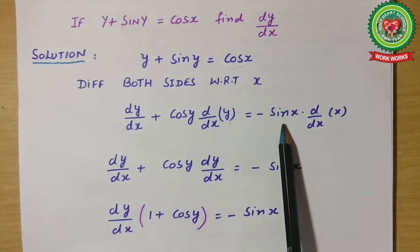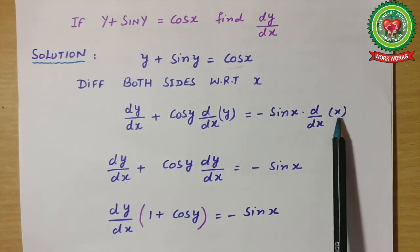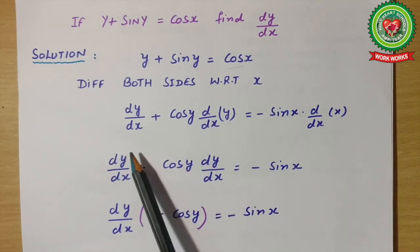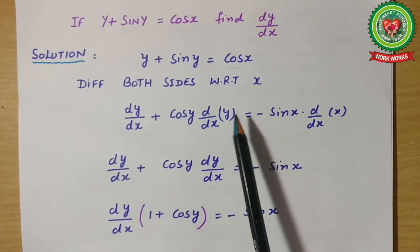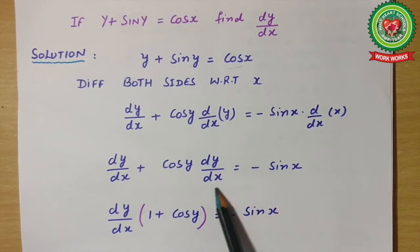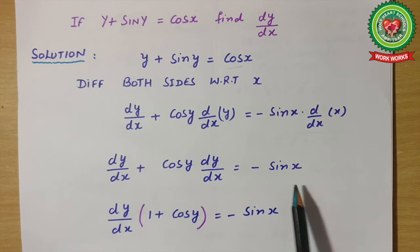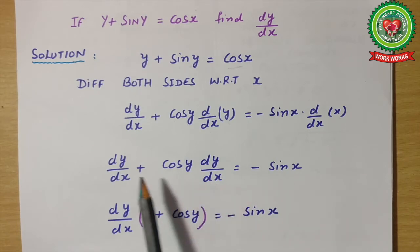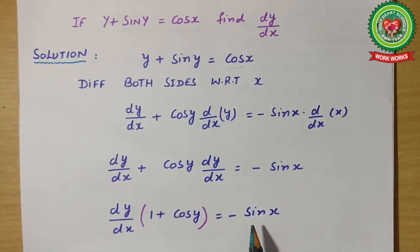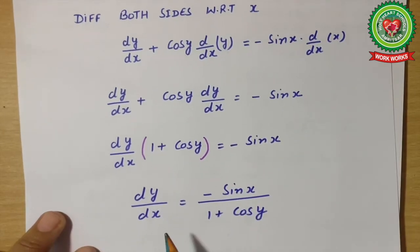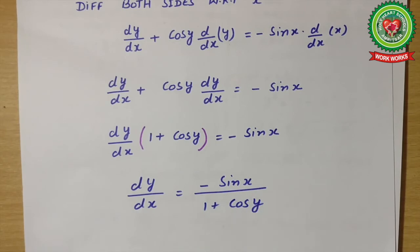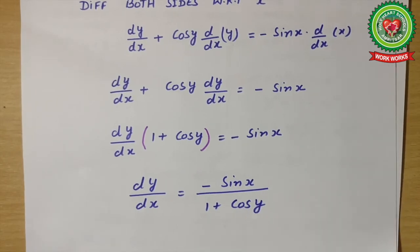cos x differentiation is -sin x; the angle is x. Solving the equation: dy/dx + cos y · dy/dx = -sin x. Now take dy/dx as a common factor: (1 + cos y) dy/dx = -sin x. Collecting the terms, dy/dx = -sin x / (1 + cos y).